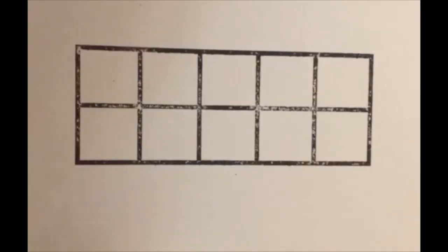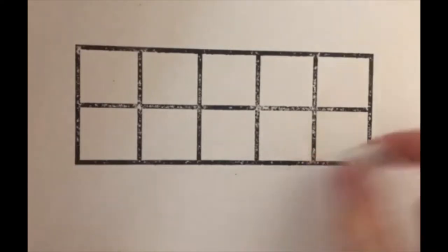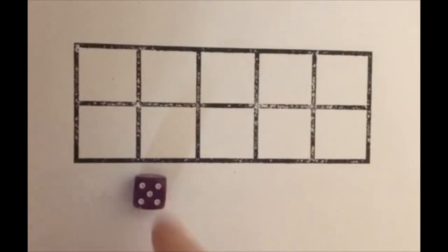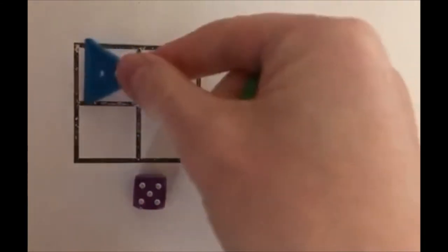With a 10 frame, children could roll a dice, a 10-sided dice if you have one, or a normal dice, and then fill up the number on the grid. 5. This time I'm using buttons.